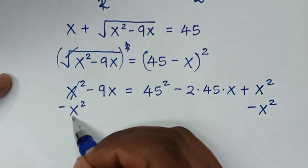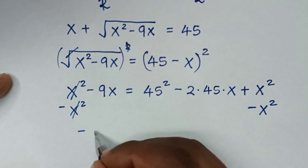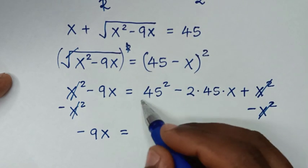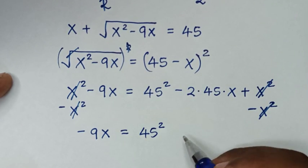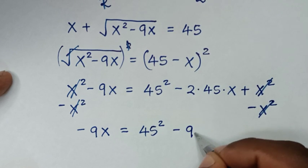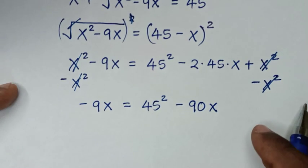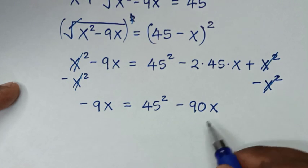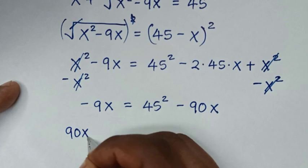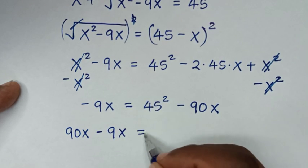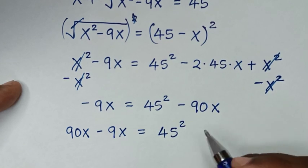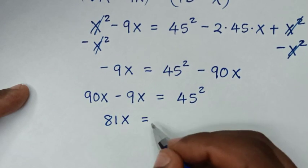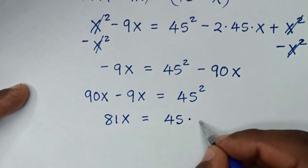So x² minus x² cancels on the left, leaving −9x. On the right, x² minus x² is 0, leaving 45² minus 2 times 45x, which is minus 90x. We move −90x to the left side, making it positive 90x, so 90x minus 9x equals 45². That gives 81x equals 45 times 45.